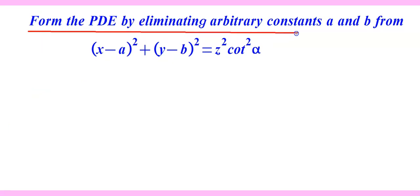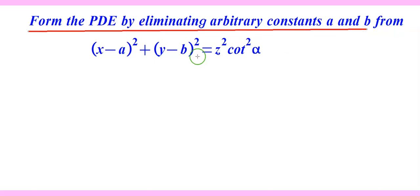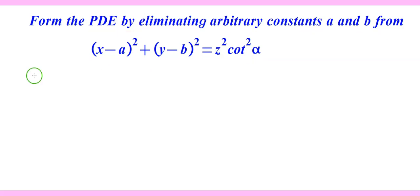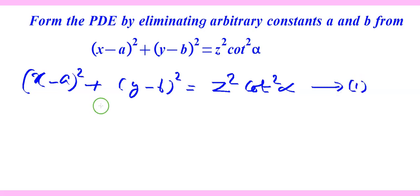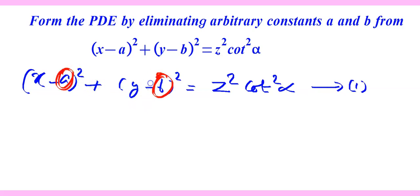Form the partial differential equation by eliminating arbitrary constants a and b from (x−a)² + (y−b)² = z²cot²α. Here we have the equation (x−a)² + (y−b)² = z²cot²α as equation 1. We are going to use partial differentiation to eliminate these arbitrary constants. Let us first differentiate equation 1 partially with respect to x.